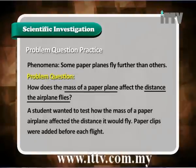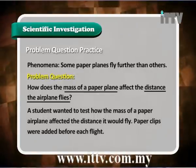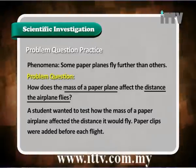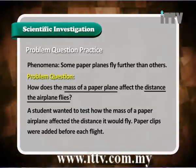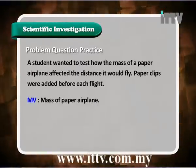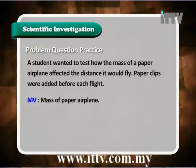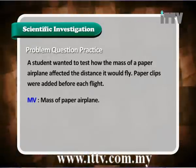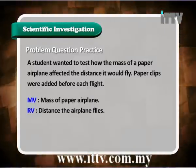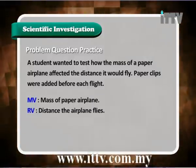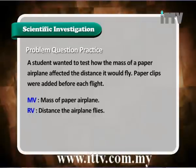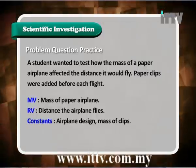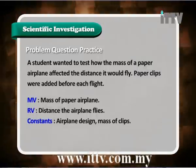A student wanted to test how the mass of a paper airplane affected the distance it would fly. Paper clips were added before each flight. The MV — the manipulated variable — would be the mass of the paper airplane. The responding variable would be the distance the airplane flies. The constant variables would be the airplane design and the mass of the clips.